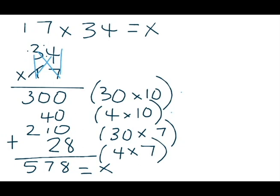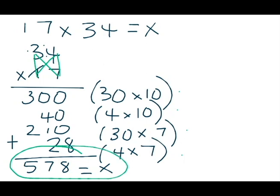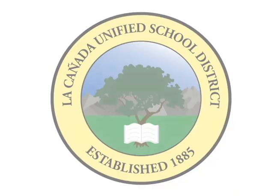You or your student might think it's easier to do 3 times 1 (30 times 10), and instead of moving over to the 4, stick with the 3 and do 3 times 7 (which is actually 30 times 7). Then move over to the 4: 4 times 1 (4 times 10), and then 4 times 7 to end on. So even though it's in a different order than what I did, when you add all of those partial products together you're going to get the same exact product in the end. Hope that makes sense and good luck — thanks again for watching!